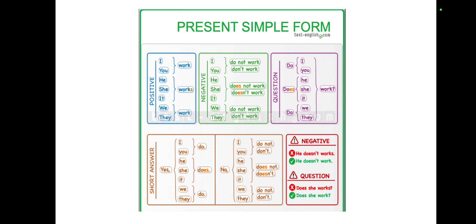A positive sentence means it doesn't have the word 'not.' On the other hand, in the green box, it is negative because it has the word 'not.' Now, looking back at the positive form: whenever you see I, you, we, or they, make sure the word after it is just a base word — meaning no addition like 's' or 'es.' For example, the base word for 'work' is 'work,' and the base word for 'eat' is 'eat,' not 'eats' with an s.